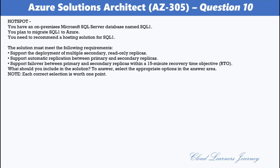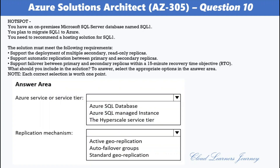Question 10. You have an on-premises Microsoft SQL Server database named SQL1 and plan to migrate it to Azure. Requirements are: support deployment of multiple secondary read-only replicas; support automatic replication between primary and secondary replicas; and support failover within a 15-minute recovery time objective. For Azure service or tier: Azure SQL Database. For replication mechanism: active geo-replication. For read-only replicas: read scale with 1 to 4 high availability replicas, 1 to 30 named replicas, and 0 to 4 geo-replicas. To support a 15-minute RTO, manual failover is used — manual database failover refers to failover of a single database to its geo-replicated secondary using unplanned mode.